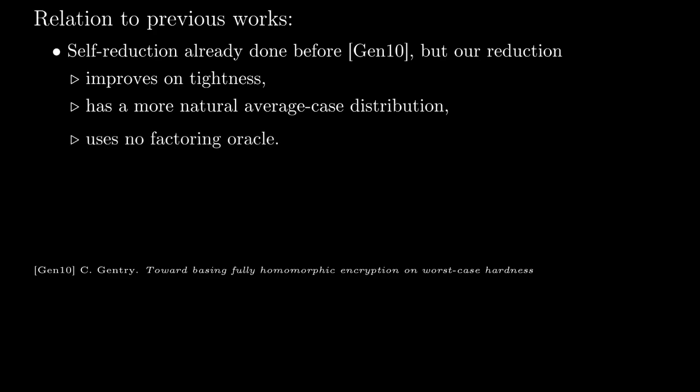How does our result relate to the literature? Well, in 2010 Gentry also derived a worst-case to average-case reduction for ideal lattices. We improve on this result in three ways. 1. Our reduction is tighter. The blow-up factor is smaller. 2. Our description of the average-case distribution is mathematically more pleasant. We use the uniform distribution over the Arakelov class group. 3. We do not require a factoring oracle. So our reduction can also be done in the classical world.